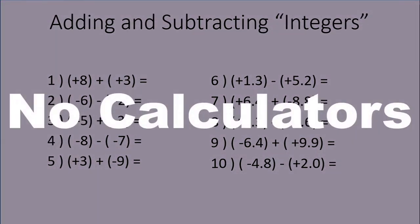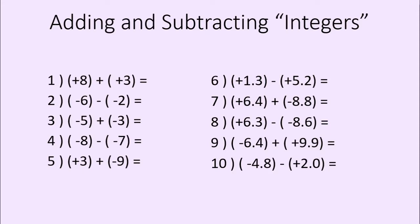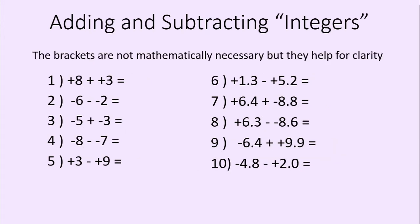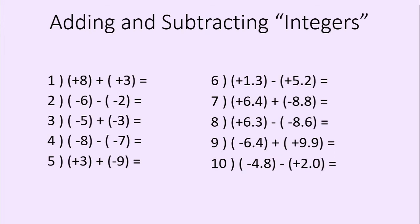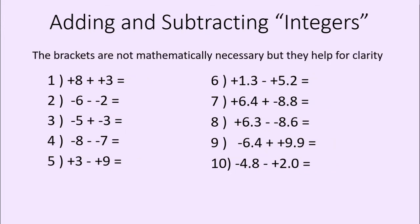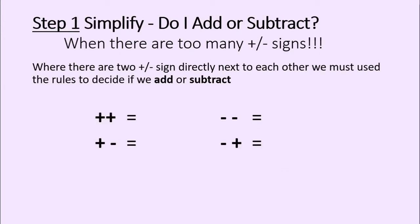Put that calculator away — we are not using calculators today. Each of these questions has values in brackets which are being added or subtracted. Now those brackets are not mathematically necessary, but without them it looks a little unclear and messy. The brackets help to show that I'm adding or subtracting either a positive or a negative number. Without those brackets, there are way too many plus and minus signs. So to add or subtract positive or negative rational values or integers, we first need to sort out whether we need to add or subtract when there are too many plus or minus signs.